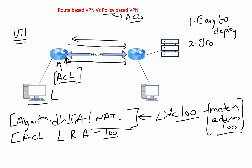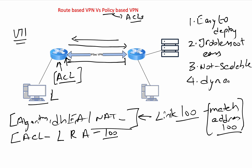So for policy-based VPN: troubleshooting is easy, it's easy to deploy, but it is not scalable, and dynamic routing is not allowed — because it is purely based on ACLs and does not interact with layer 3 routing.